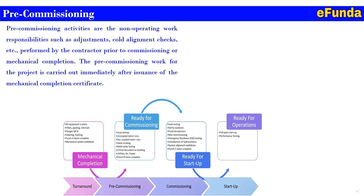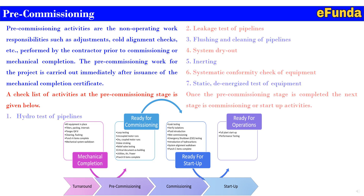Ready for startup includes leak test, verify insulation, fluid production, wet commissioning, emergency shutdown (ESD) testing, introduction of hydrocarbon, system alignment walkdown, and punch C items completed. Finally, ready for operation covers full plant startup and performance testing. A checklist of activities at the pre-commissioning stage includes: hydro testing of a pipeline, leakage test of a pipeline, flushing and cleaning of a pipeline, system dryer, inner team, systematic conformity check of equipment, and static de-energization test of equipment.